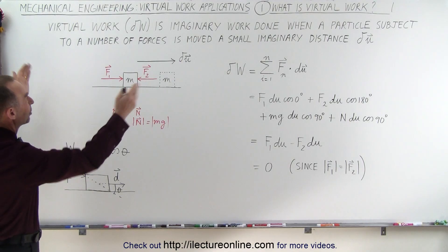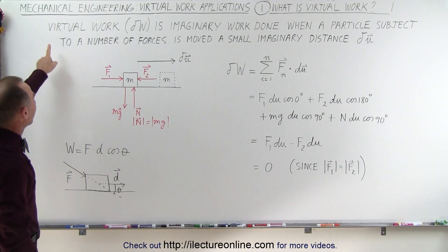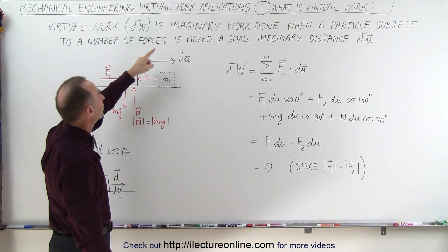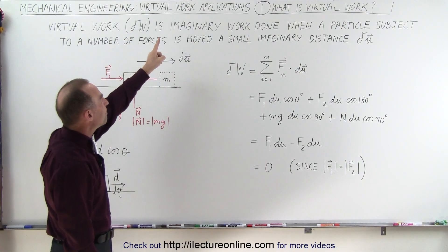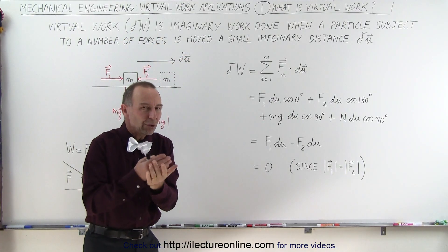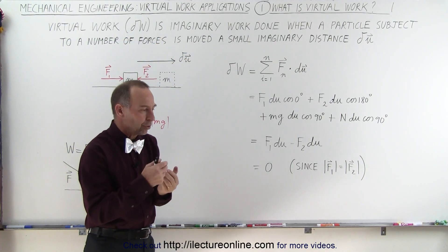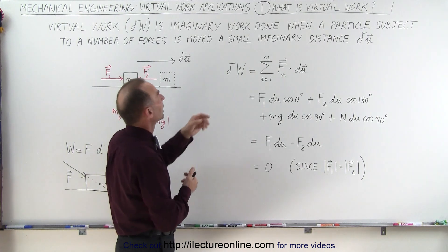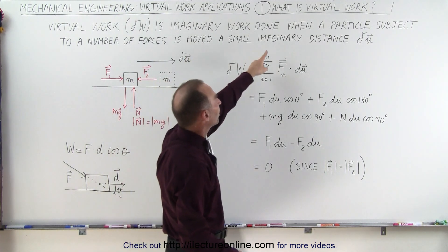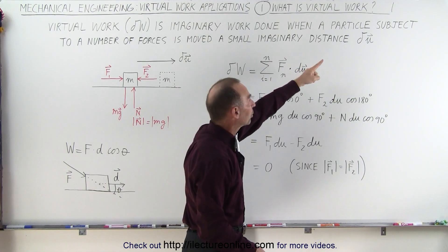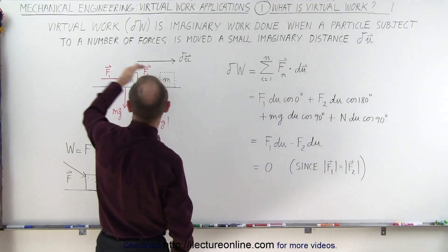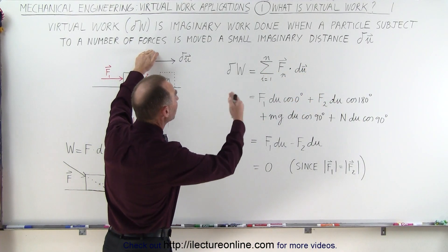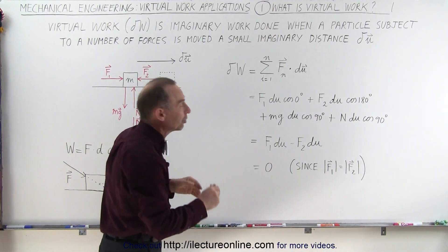So let's look at our definition. Virtual work, which can be defined as delta W, is imaginary work. So you're not really doing real work, you're just doing an imaginary thing here. It's imaginary work done when a particle, which is subject to a number of forces, is moved a small imaginary distance.